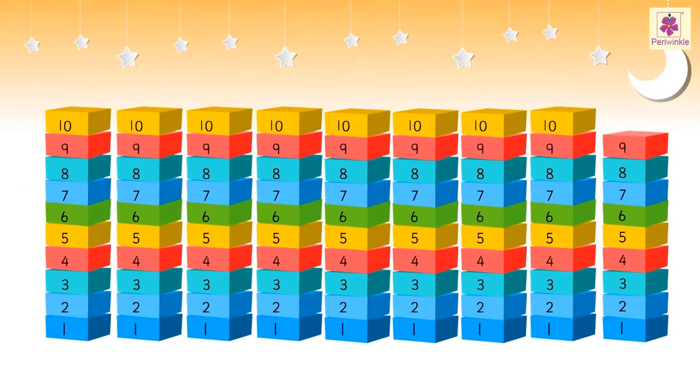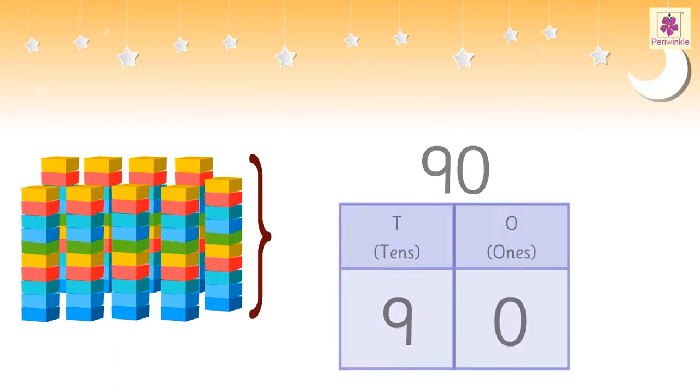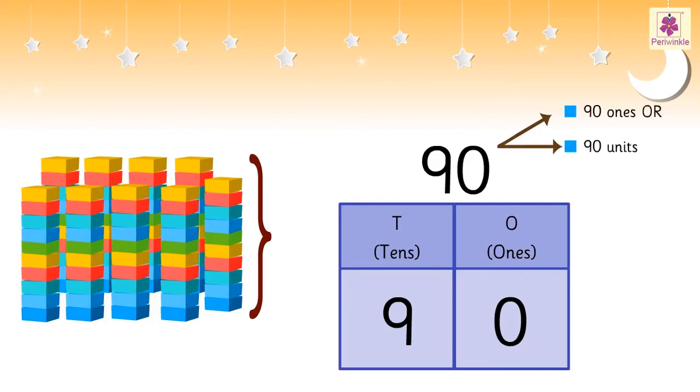89 and one more is 90. 9 tens make 90. We call this as 90 ones or 90 units or 9 tens and zero ones.